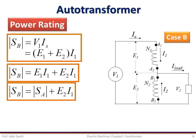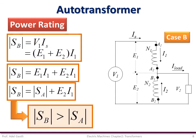But we know that E1 I1 is actually equal to SA, which is the power for case A. Therefore, we can write that the power for case B is equal to the power for case A plus E2 multiplied by I1, which means that the power transfer capability of the autotransformer is higher than that of the normal two-winding transformer, even though we are using the same windings and core.